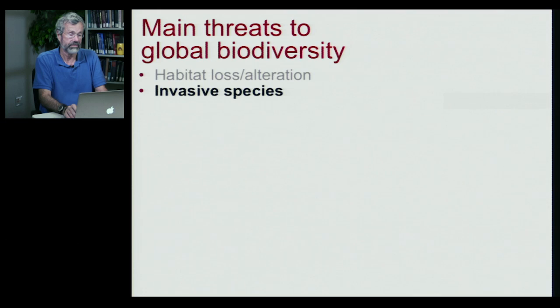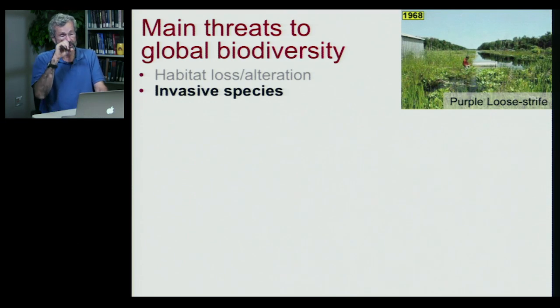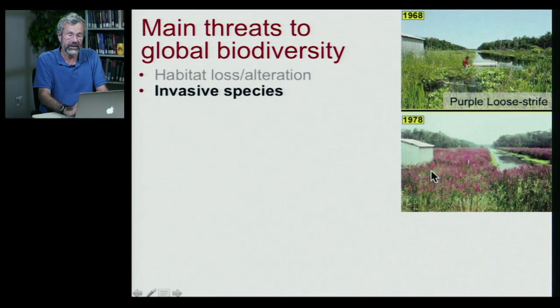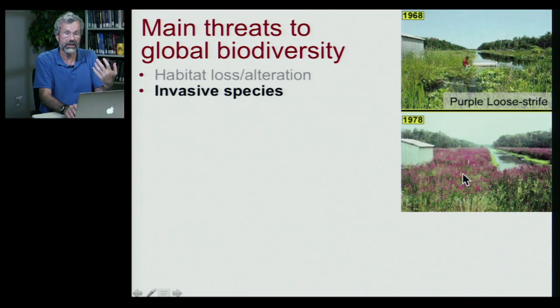Beyond habitat loss and alteration, humans are having a huge impact on global biodiversity because we move animals around. One result is what's called invasive species. An example seen in Minnesota is a plant called purple loosestrife, brought by someone who wanted the same plants they'd enjoyed in England and planted them around their lakeshore property. Purple loosestrife then dominated many areas and is now the most common plant, out-competing a lot of native plants.